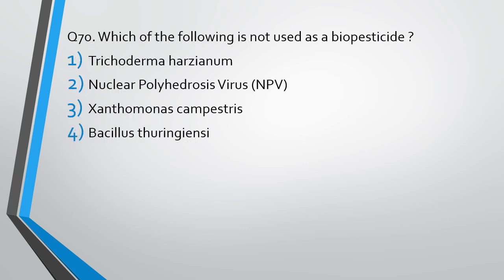Question number 70. Which of the following is not used as a biopesticide? Trichoderma harzianum, NPV that is nuclear polyhedrosis virus, Xanthomonas campestris, or Bacillus thuringiensis. The correct answer is option 3, Xanthomonas campestris.